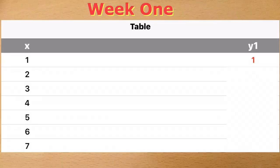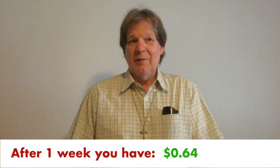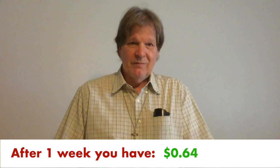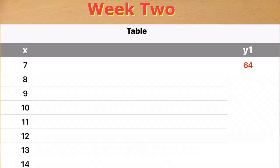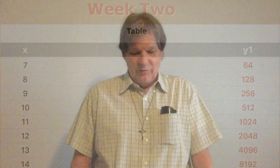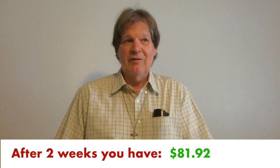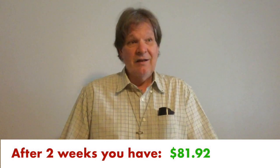Let's look at the first week. You see that after one week you have a grand total of 64 cents. Now you've only got a little more than four weeks to get past a million dollars and you don't even have a dollar yet. It doesn't look very good. But let's go on to the second week. After the second week, 81 dollars and 92 cents — not quite a hundred. How are we going to get to a million by the end of 30 days? We're not even to a hundred and we're almost halfway there.